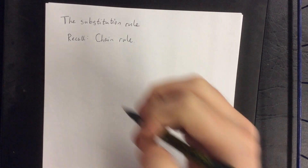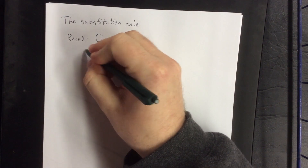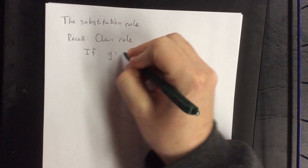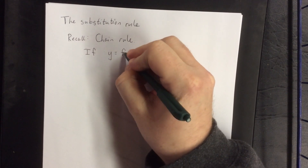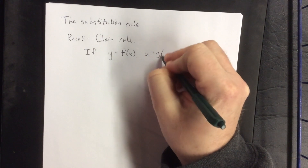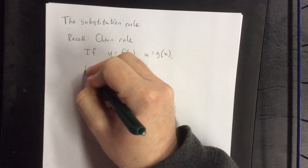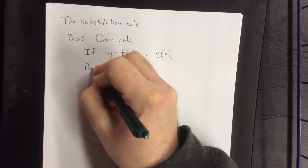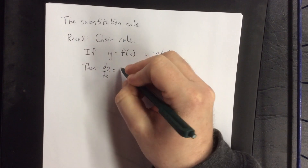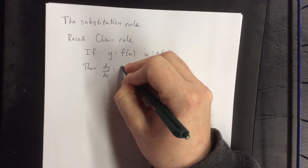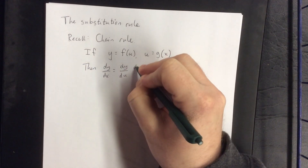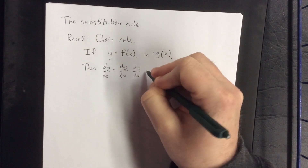The chain rule originally stated: if y is some function of u, and u is some function of x, then the derivative of y with respect to x will be equal to the derivative of y with respect to u times the derivative of u with respect to x.